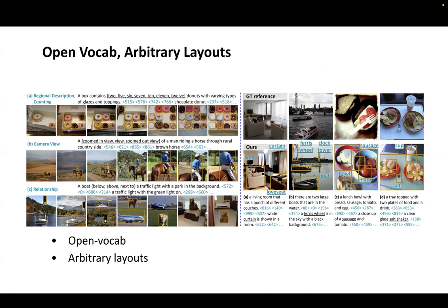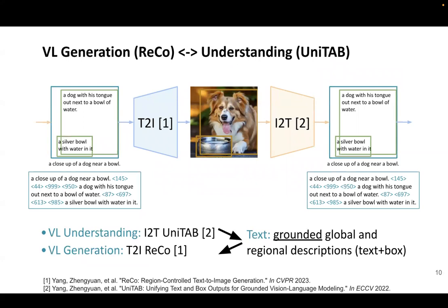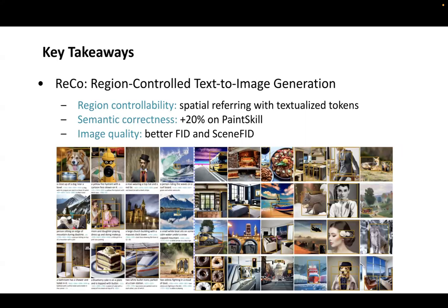Finally, other than text-to-image generation, the grounded region-controlled text is also a natural representation for image-to-text vision-language understanding tasks. We showed that with grounded region-controlled text, we can easily present a closed loop between analysis and synthesis. As a conclusion, we proposed RECO: Region-Controlled Text-to-Image Generation. With the proposed grounded region-controlled text, RECO provides strong controllability, improves semantic correctness, and leads to better image generation quality. Thank you.